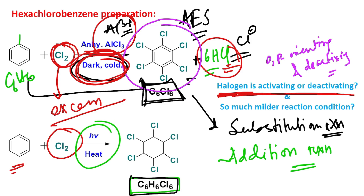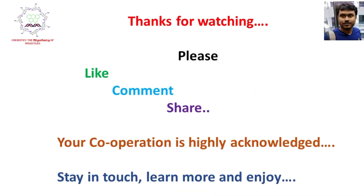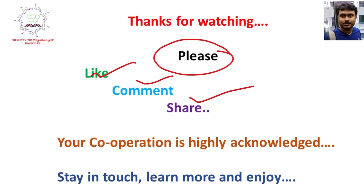So from this discussion we understood how benzene is converted into hexachlorobenzene, and then through aromatic nucleophilic substitution this hexachlorobenzene is converted into hexafluorobenzene. This is the end of the discussion. Thanks for watching. If you enjoyed my teaching, please like, comment, share, and subscribe to my channel, Chemistry: The Mystery of Molecules. Stay happy, stay blessed — see you in my next video.